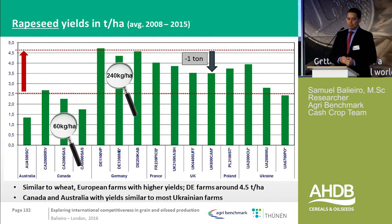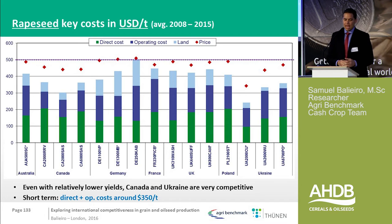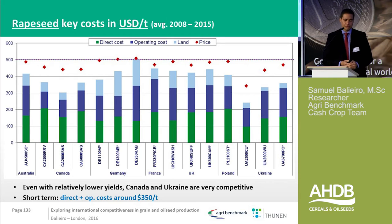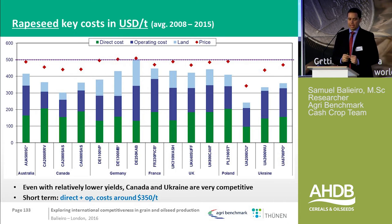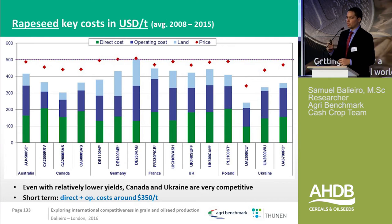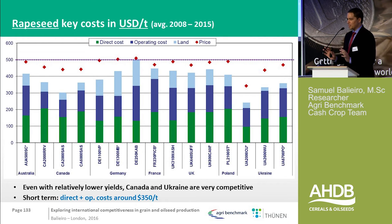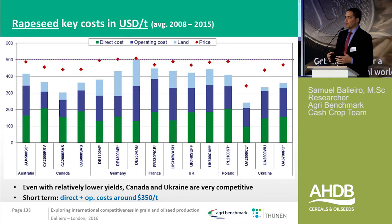Rapeseed prices are much more stable — you see almost a flat line across countries. Canada has a price penalty because those farms are in Saskatoon with much longer transportation costs. UK farms, without the coupled payment, get a very squeezed margin. Ukraine shows a very high margin when comparing prices to total costs. Most farms are able to produce rapeseed for around $350 per ton.